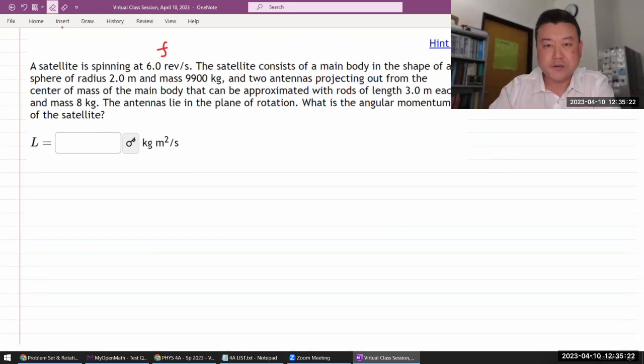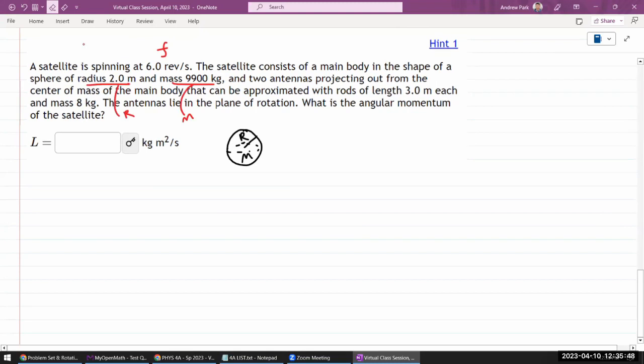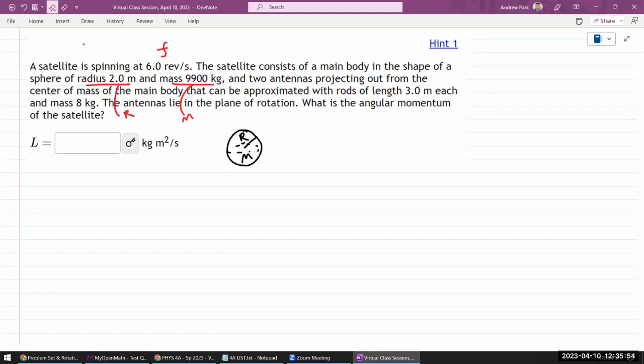The satellite consists of a main body in the shape of a sphere. Wow, that's complicated. All right, of some radius and some mass, and two antennas projecting out from the center of mass of the main body.